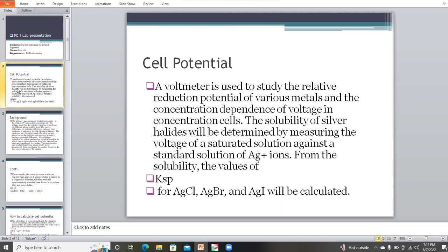In this experiment, we use a voltmeter to find the cell potential, reduction potential, and oxidation potential of different electrolytic cells. A voltmeter is used to study the relative reduction potential of these metals and the concentration dependence of voltage in concentration cells. The solubility of silver halide will be determined by measuring the voltage of a saturated solution against a standard solution of silver ions. By this method, we study and find the solubility values of KSP for aluminum chlorides.